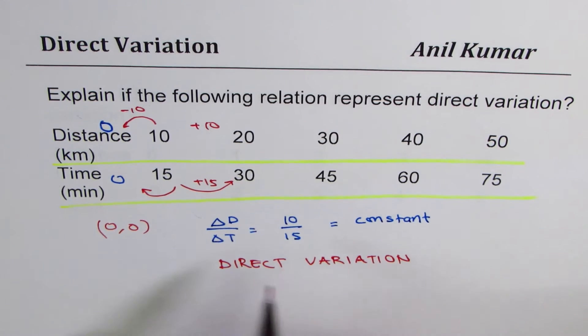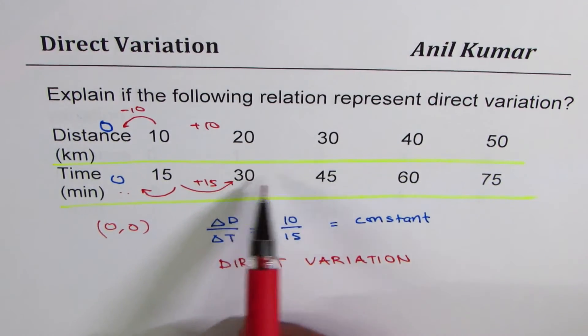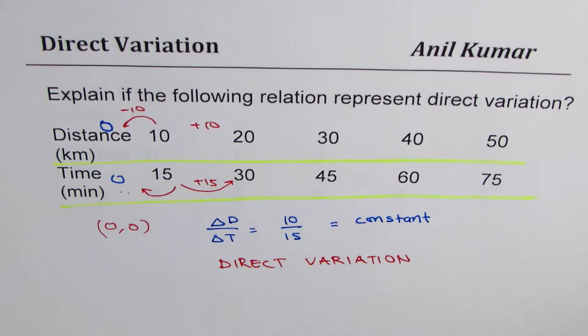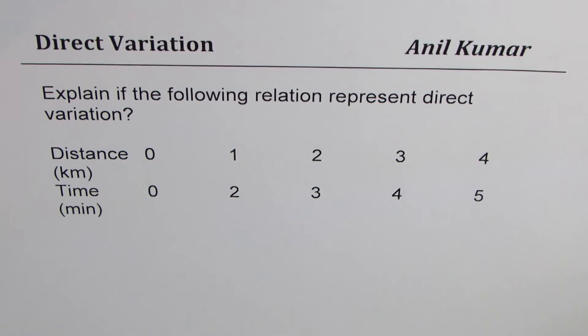So it is very important to find 0, 0. A direct variation is a straight line. That means this difference of y values to x values should be same. And at 0 time, distance should be 0. Therefore, it is a direct variation. Now let's look into another example.